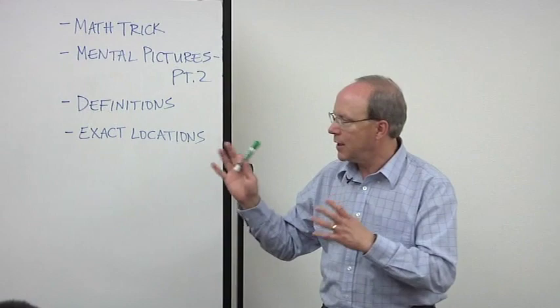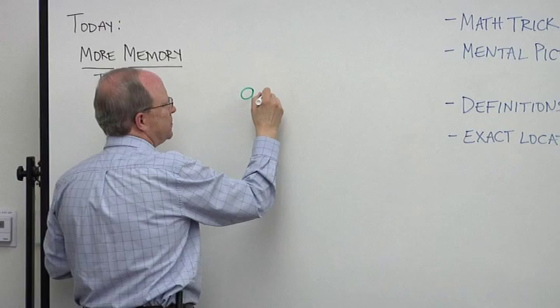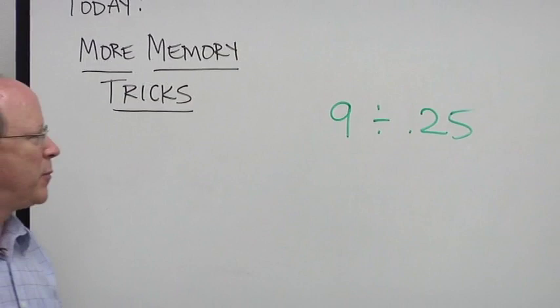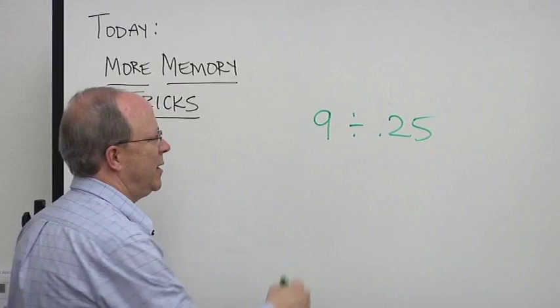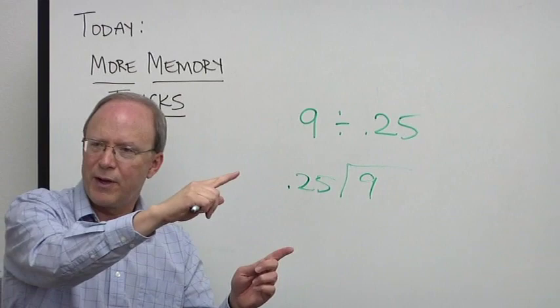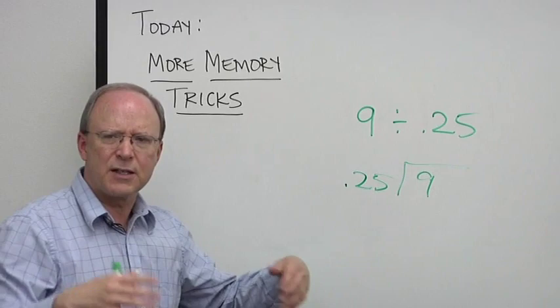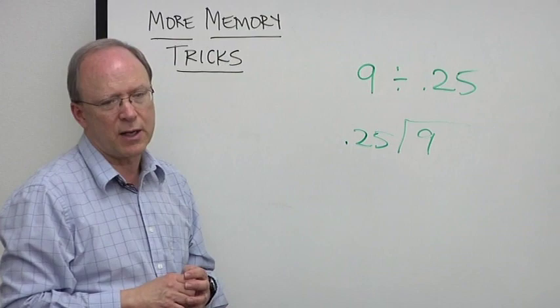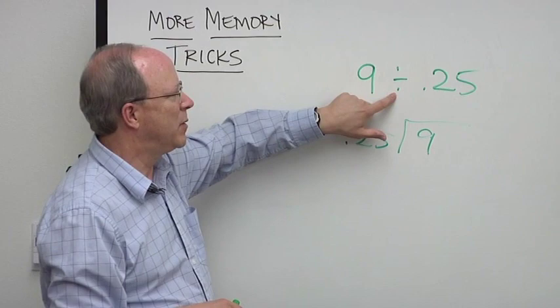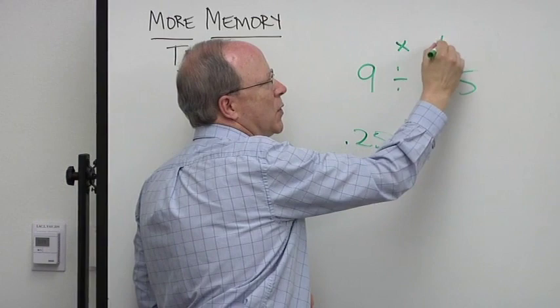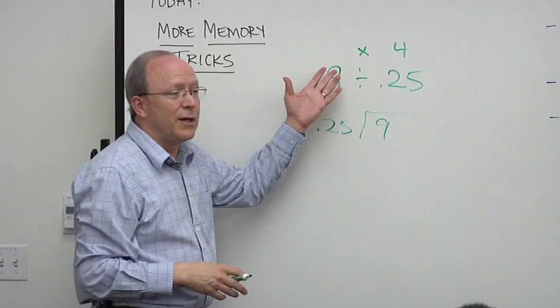This is nothing you need to write down, but again it's to show you the power of tricks. If I asked you to do a problem like 9 divided by 0.25, you'd have to move the decimal point and work through the whole thing. If you know the trick, you can do it in about one second: whenever you have a number divided by 0.25, that's the exact same as multiplying it by 4, which is a lot easier.